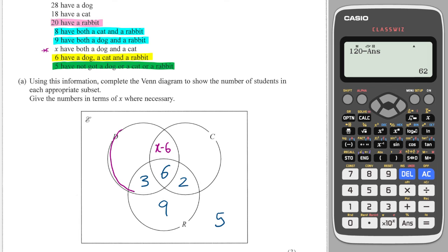Next, we have 28 have a dog, so inside this region here there are 28 people. If I want to find out what is in here, I will need to do 28 minus 3 minus 6 and minus x minus 6. That will give me 28 minus 3 minus 6 is 19, so it's 19 minus x minus 6, which is 19 minus x and then plus 6. So that is 25 minus x goes in there.